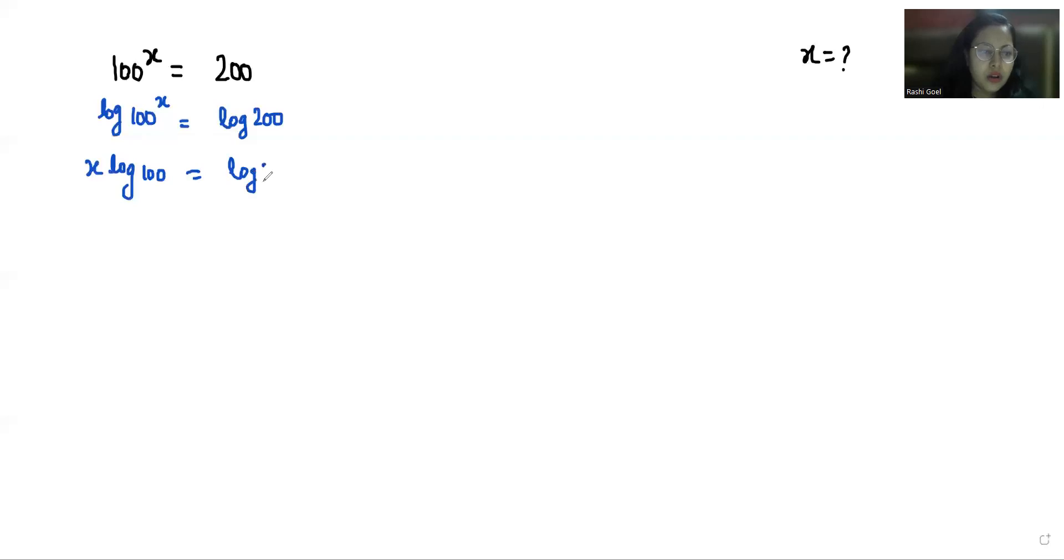If I take this log 100 to the other side, x equals log 200 by log 100. Now log 200 I can write as log 2 times 100.